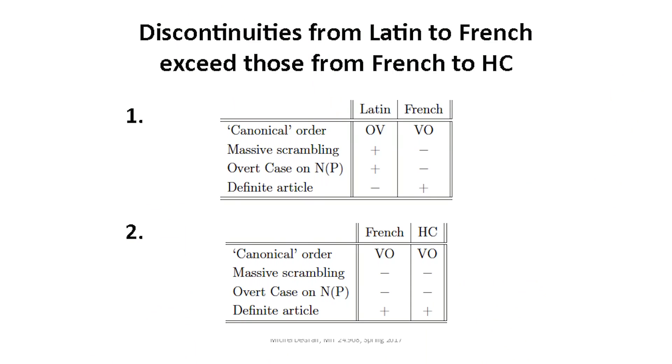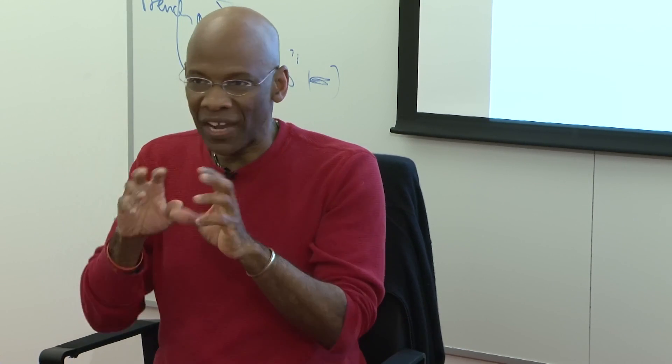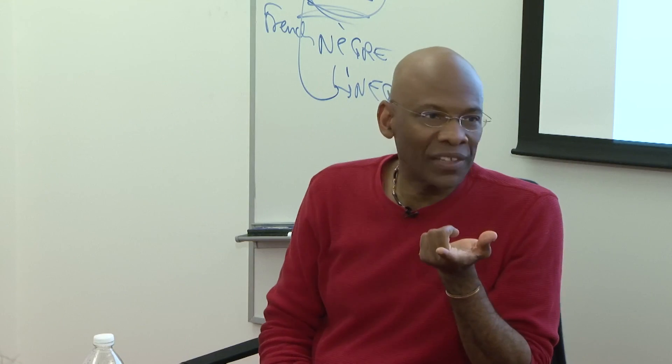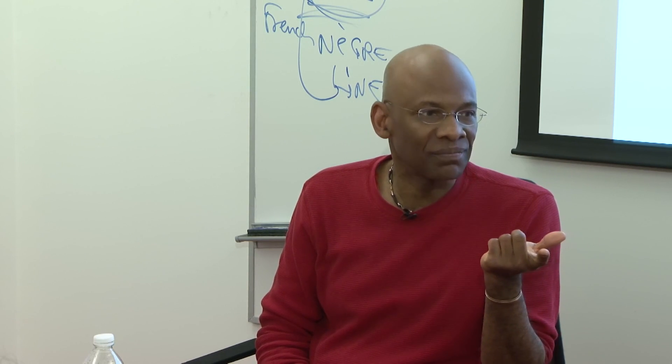Scrambling is a technical term — it means that, for example in German, you can move things around. If you say 'Mary loves pancakes,' you can say 'pancakes loves Mary.' The verb has to be in second position, but the arguments can move around. The verb has a strict position, but arguments can come first. Latin is of the same nature. It's the same in Arabic too. Many languages have this capacity called scrambling.